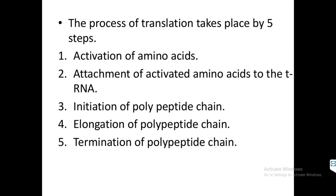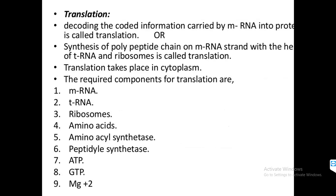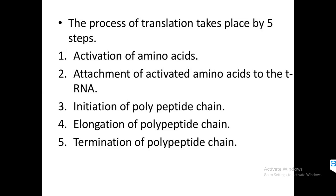The process of translation occurs in five main steps. First is the activation of amino acids, carried out by the aminoacyl synthetase enzyme. Second is the attachment of activated amino acids to the tRNA. Third is the initiation of the polypeptide chain. Fourth is elongation, extending the polypeptide chain to form a complete protein. Fifth is termination, which stops the translation process.